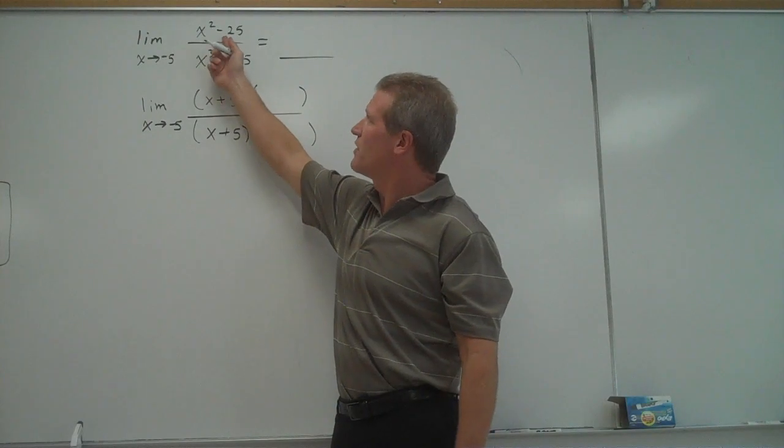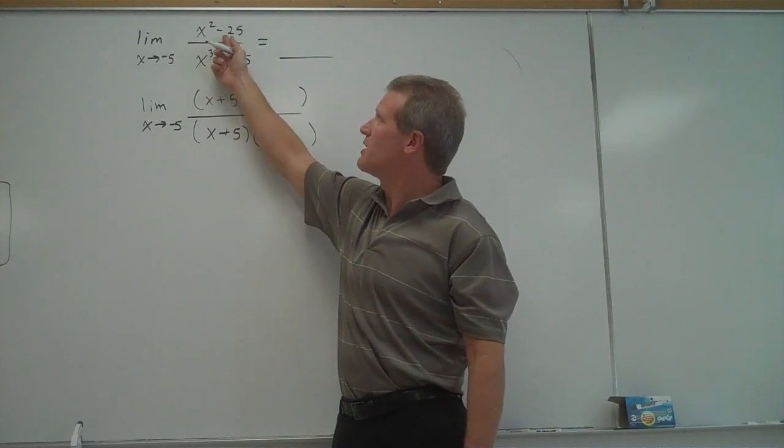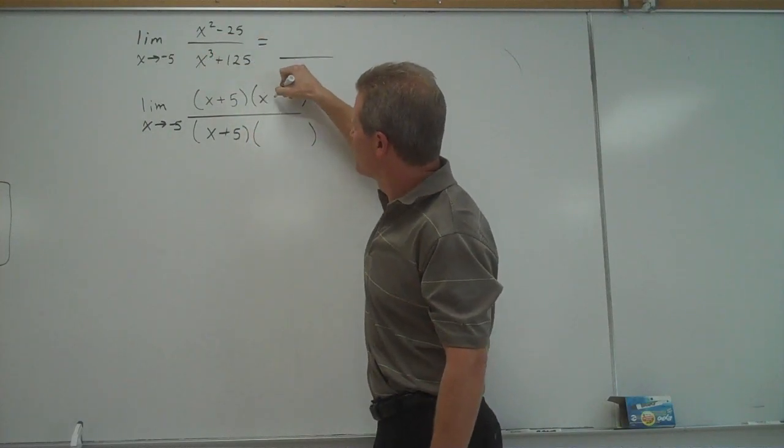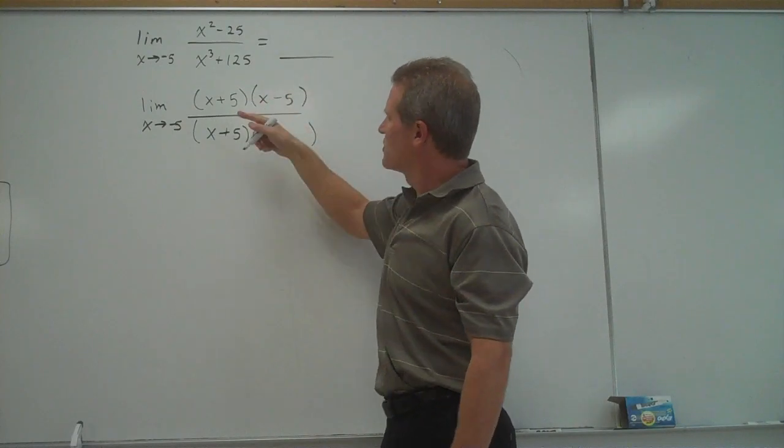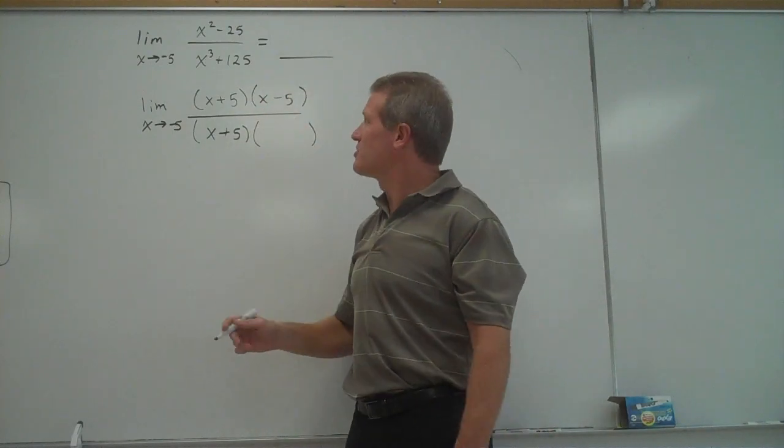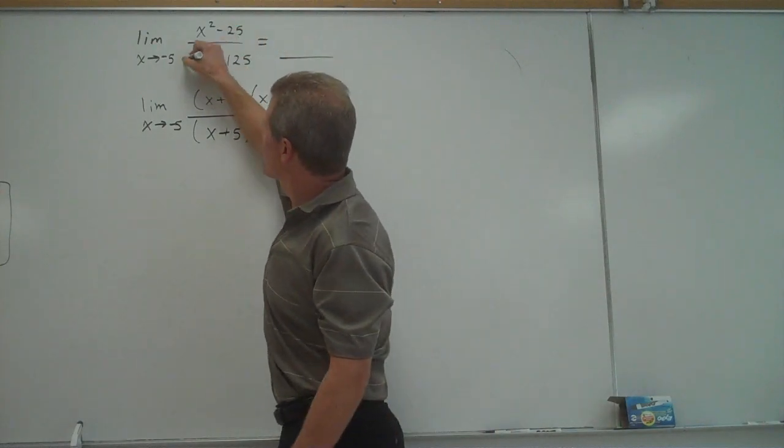Well, the top's not hard to factor. The numerator, if you factor it, is x minus 5, x plus 5, or vice versa. On the bottom, though, it's a little bit harder to understand how to factor x cubed plus 125.